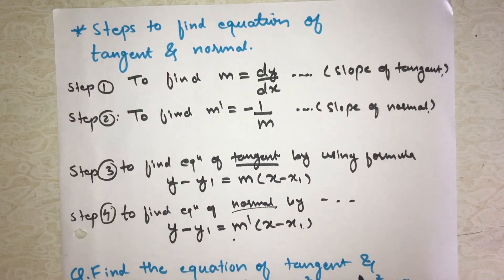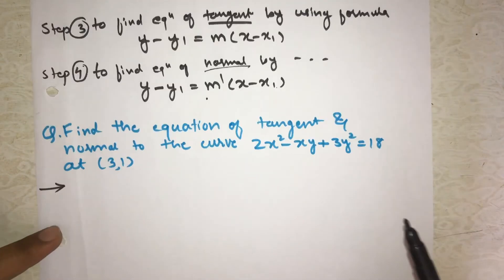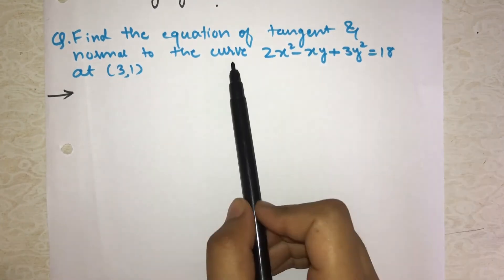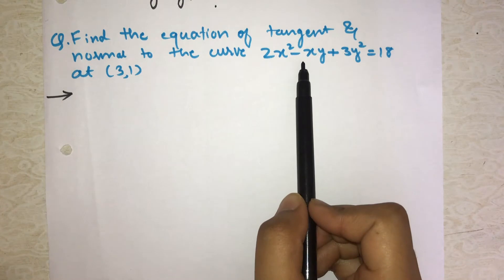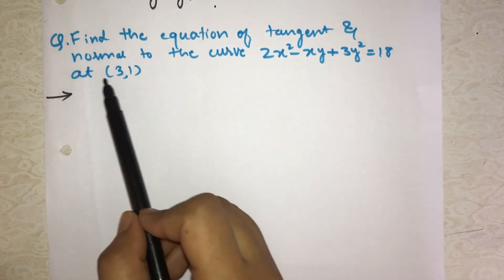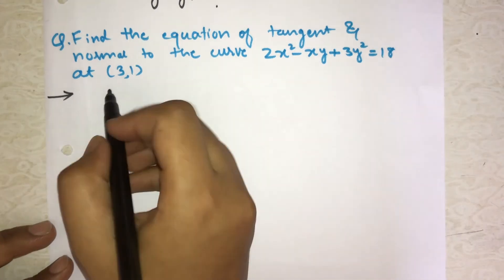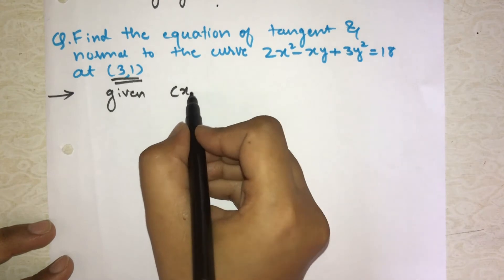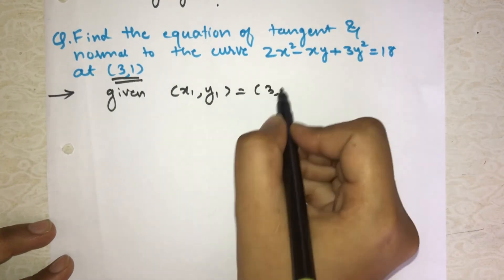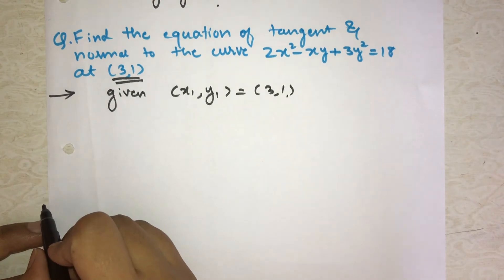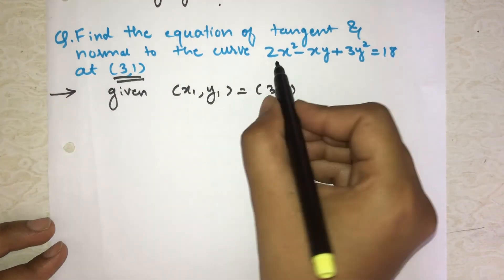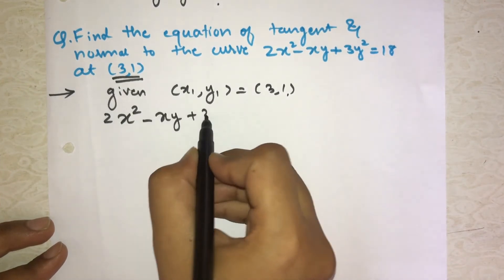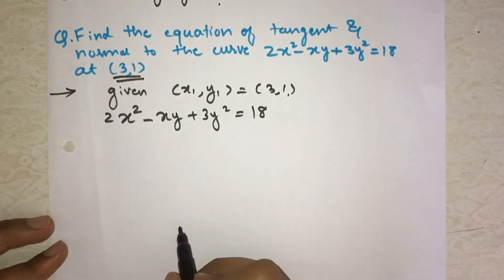Let's solve an example. Find the equation of tangent and normal to the curve 2x² - xy + 3y² = 18 at (3, 1). See, we are given (3, 1), so given x1, y1 equals (3, 1). This point is given to us.